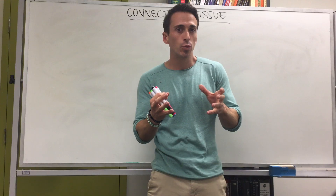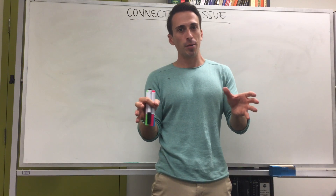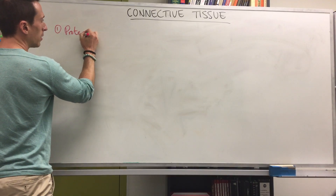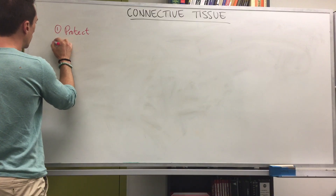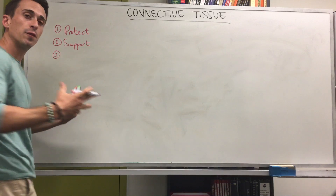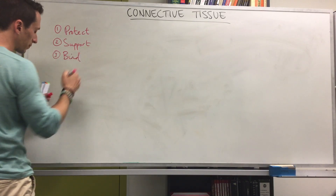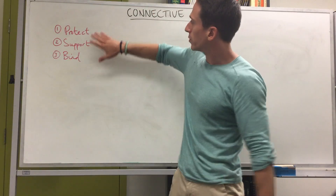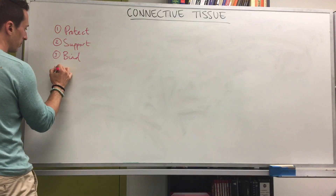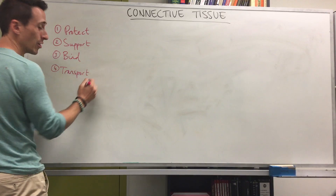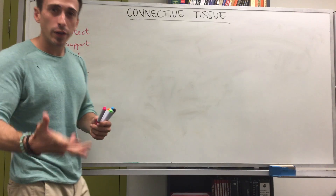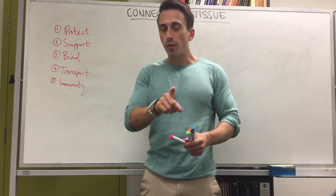What is the role of connective tissue? Connective tissue is the most abundant and also the most widely distributed tissue in the body. It plays a number of different roles: one is to protect the body, another is to support the body, and another is to help bind the body together — specifically organs. It's not limited to these roles because connective tissue can also play a role in transport and in immunity as well.